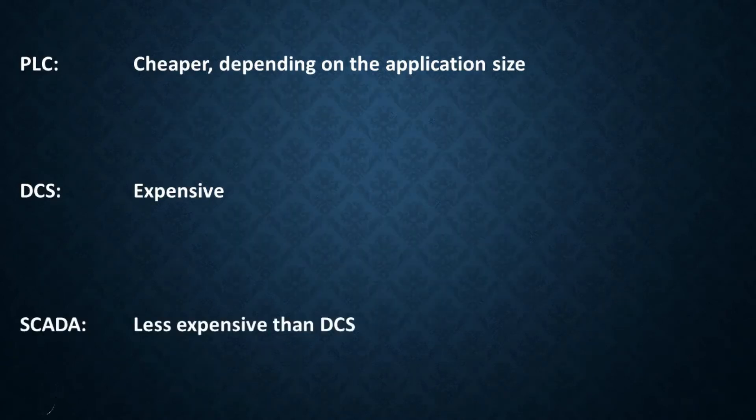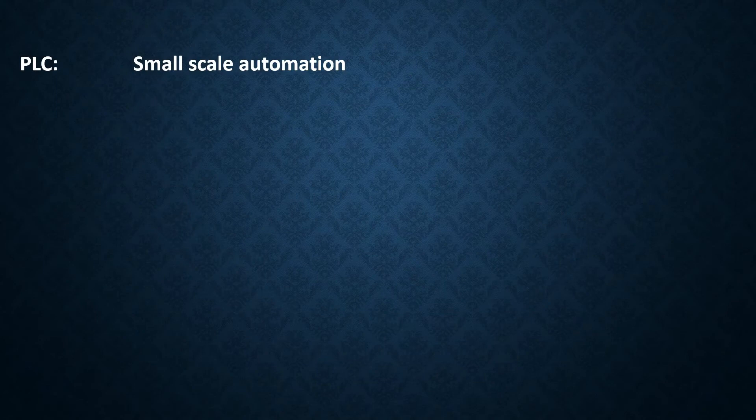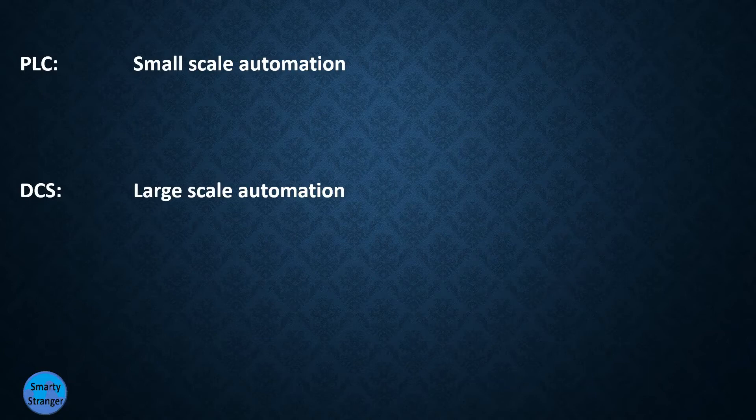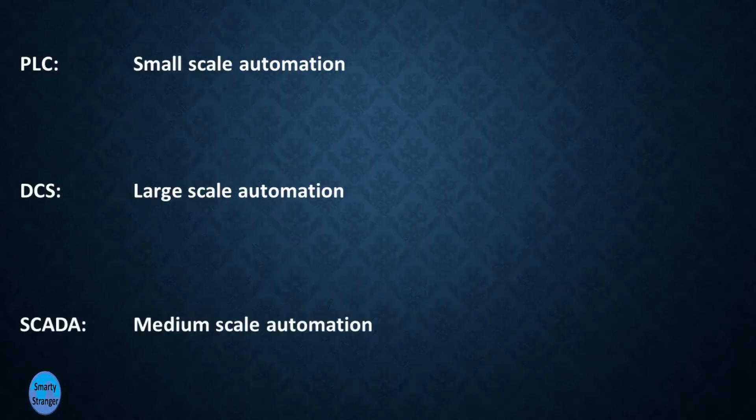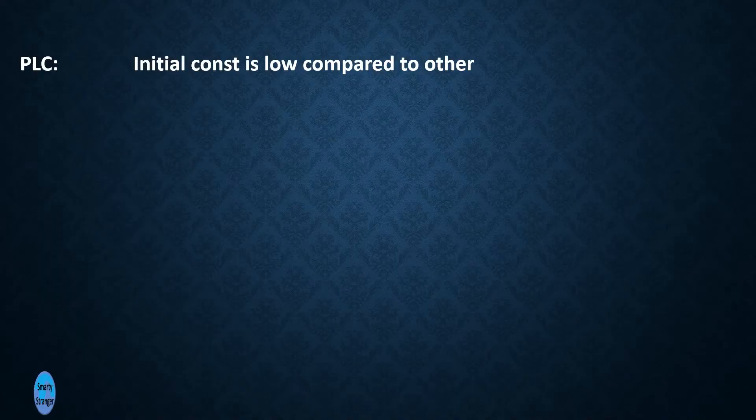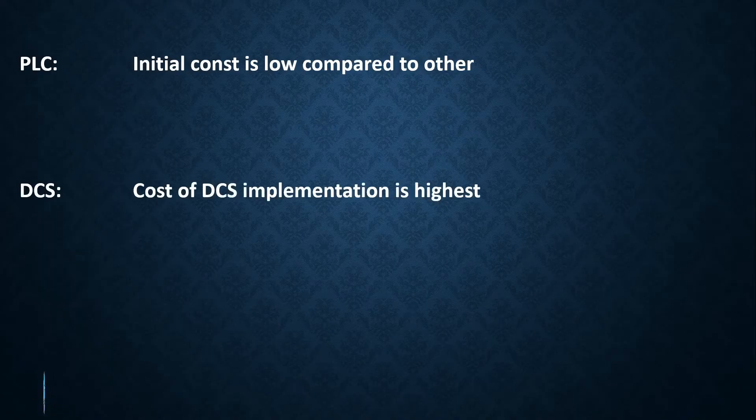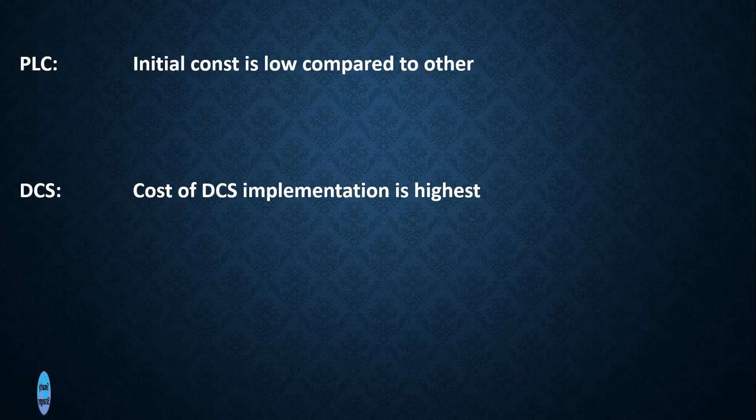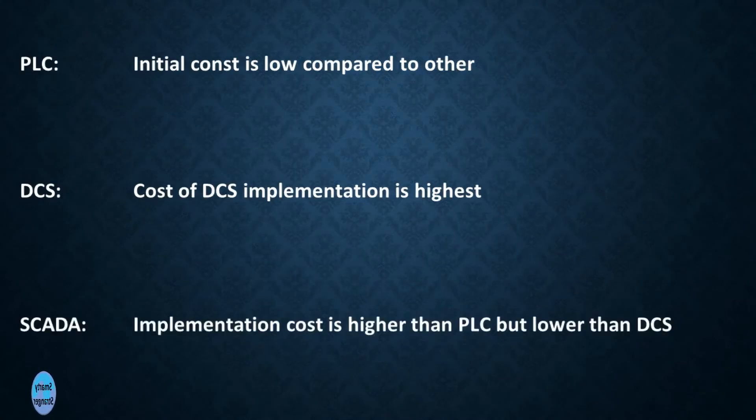PLC is cheaper depending on the application size. DCS is expensive but SCADA is less expensive than DCS. Initial cost of PLC is low compared to others, but cost of DCS implementation is highest, and SCADA implementation cost is higher than PLC but lower than DCS.